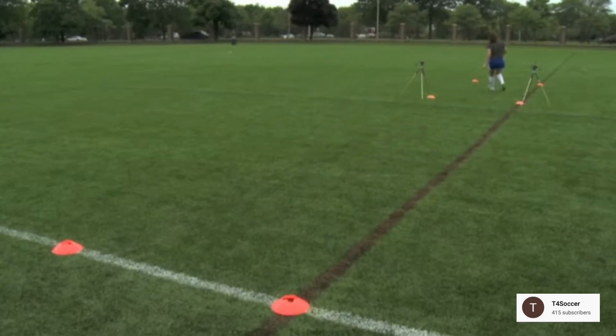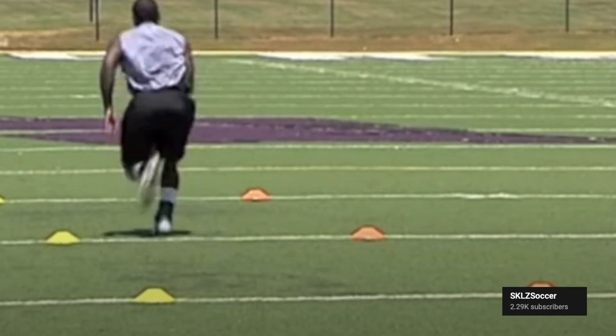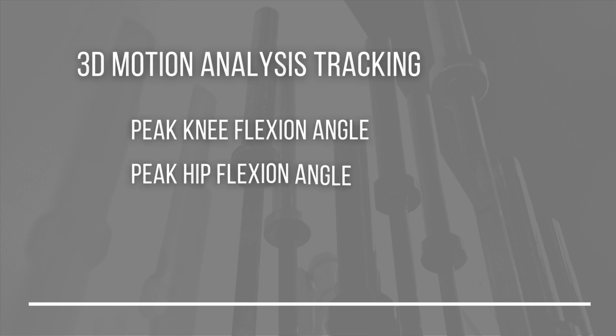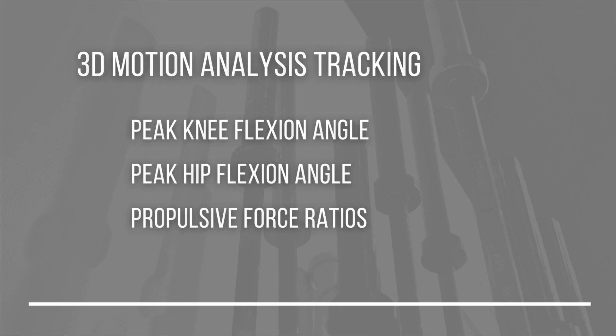The participants in this research study performed two different agility tests, both with 3D motion analysis. The first is the 505 agility test, where they sprint forward through a timing light, change direction, and sprint back through the timing light. The participants also performed the 5105 agility drill. During these drills, it wasn't just completion time that was tracked — the 3D motion analysis also tracked peak knee flexion angle, peak hip flexion angle, and propulsive force ratios for the last and second to last step.